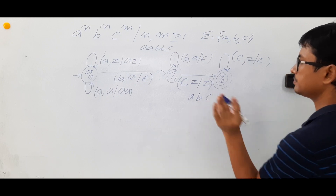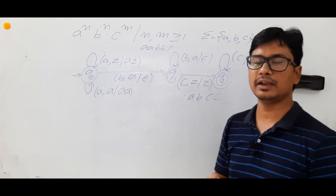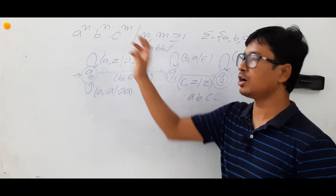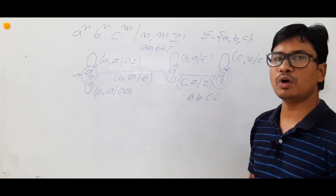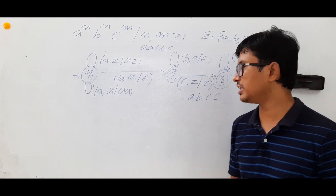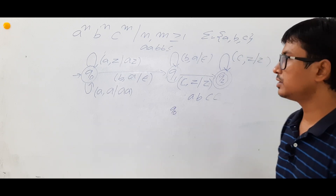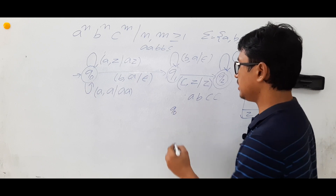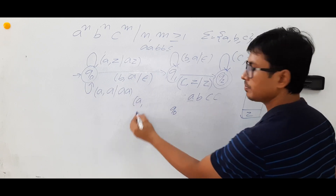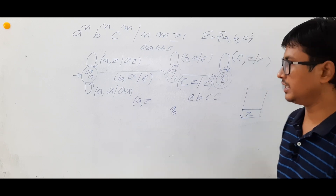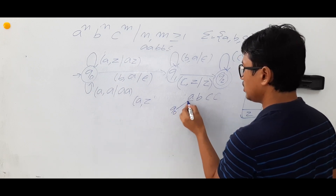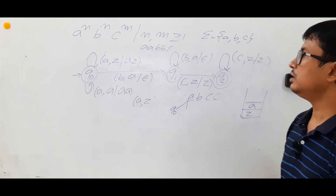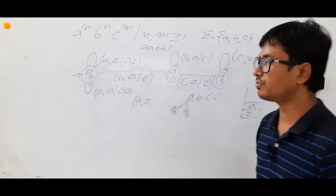Let me verify with the string 'a b c c', where n=1 and m=2. This string belongs to the given language, so the PDA should accept it. Starting in initial state q0 with only Z in the stack: I see input 'a' and stack is Z, so I push 'a' onto the stack and remain in state q0.